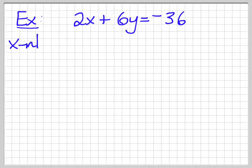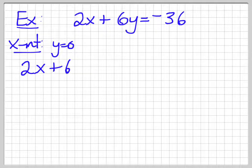So, same type of thing. So, we're going to find the x intercept. So, we're going to say y is equal to 0. So, I'm left with 2x plus 6 times 0 is equal to negative 36.